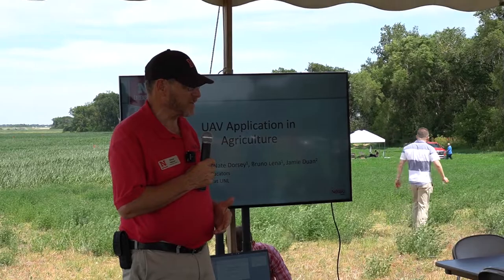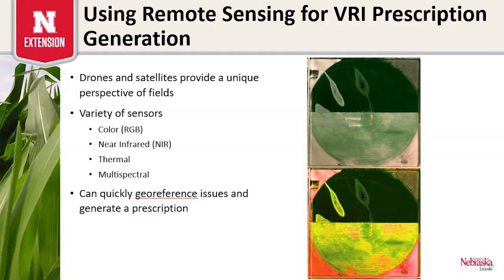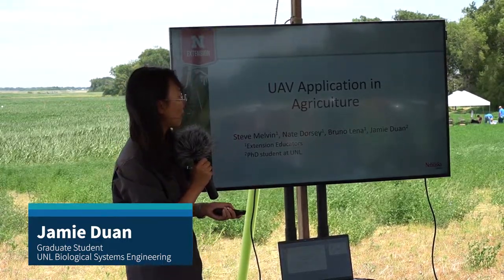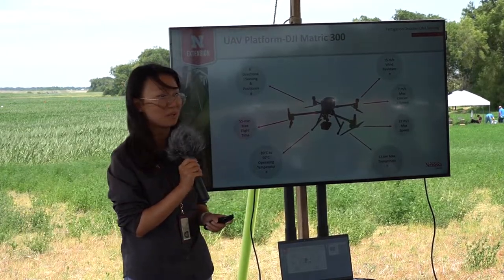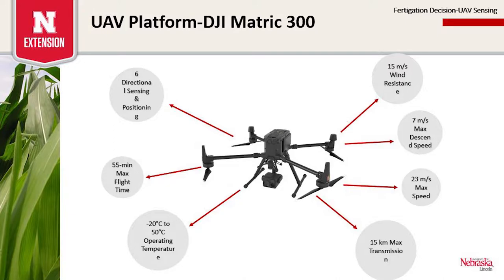Our focus today will be on some of the hardware we need, but mostly on how we generate maps and how we think about that. My research is conducted at a demonstration site near Creighton, and today I'd like to share some experience working with a drone. The drone I currently use is the Matrice 300 made by DJI, and it can work under most weather conditions. Wind resistance is up to 15 meters per second, and temperature tolerance is between negative 20 degrees to 50 degrees Celsius.